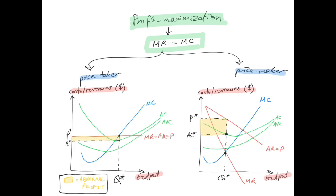For a price maker, you have the same marginal cost, average cost, and AVC curves, but the average revenue and marginal revenue curves are split — marginal revenue is twice as steep as average revenue. The intersection of marginal revenue and marginal cost determines Q-star. You then go up to read the average cost, and get the price from the demand curve — the average revenue curve. When price is higher than average cost, the vertical distance times Q-star gives the level of abnormal profit.